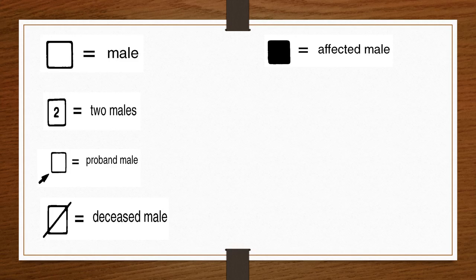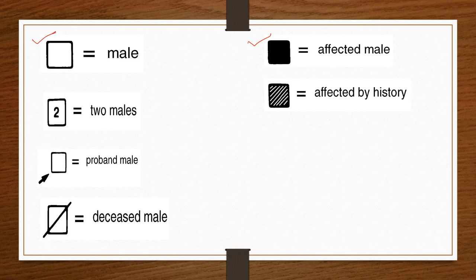An affected male — for example, one who is colorblind — is shown with a shaded square, while a plain square is a normal male. A square with lines indicates affected history, meaning a previous history of a particular disease. A square with a dot inside indicates an examined male — one who has been examined for a genetic study.